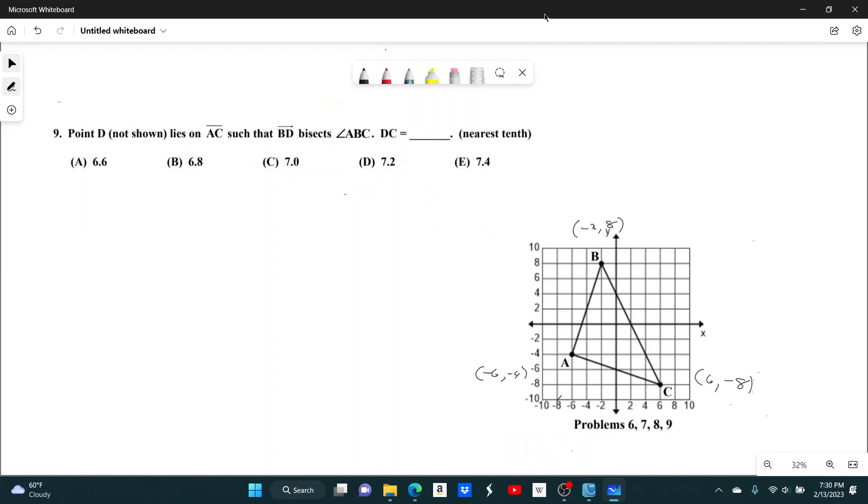Number 9. Point D in that diagram lies on AC, such that line BD bisects angle ABC. Find DC to the nearest tenth.